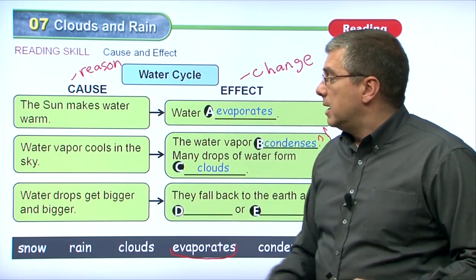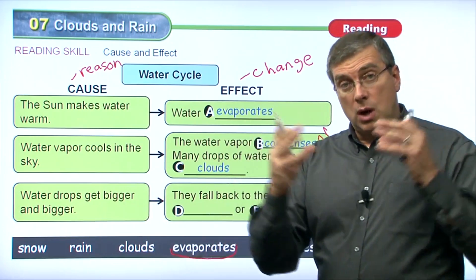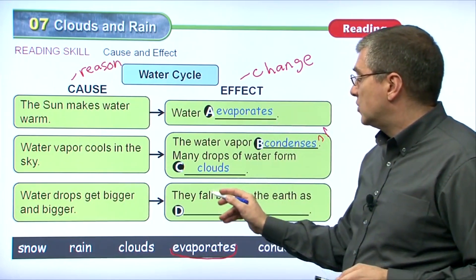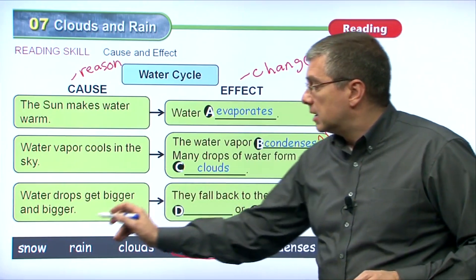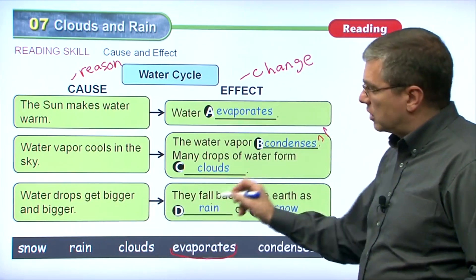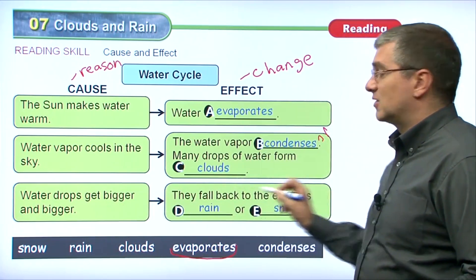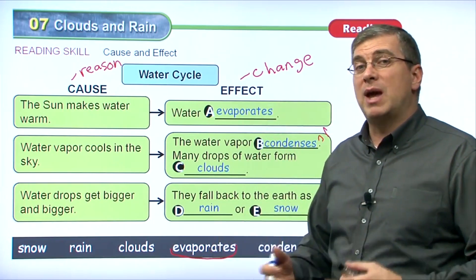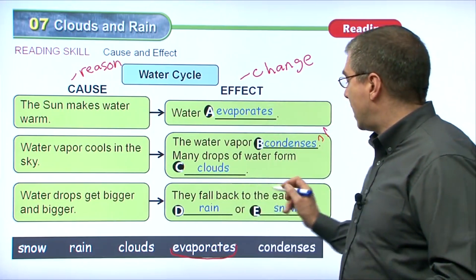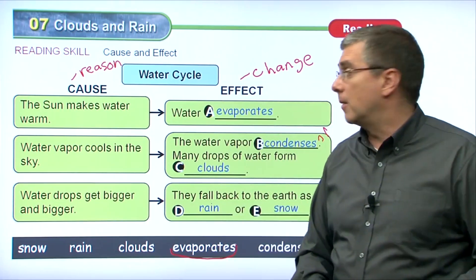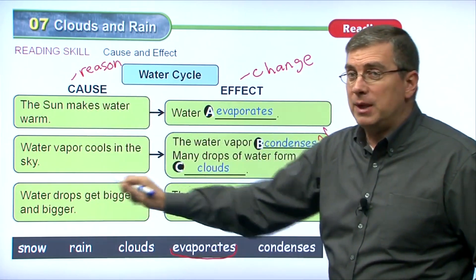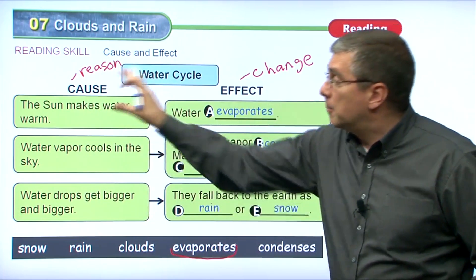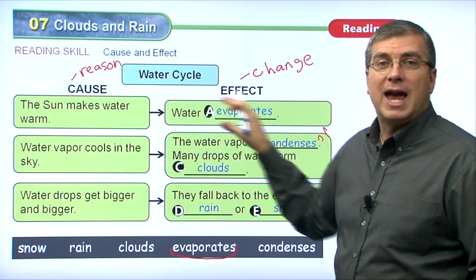Water drops get bigger and bigger — that's the cause. They fall back to the earth as rain or snow — that's the change, the effect. You could also say they fall as snow or rain depending on whether it's warm or cold. Here we see the reasons for something happening and the changes — the effects of what happens because of these reasons. Because of this cause, this effect happens. That's cause and effect.